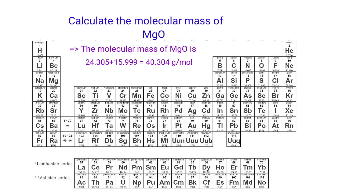So the molecular mass of MgO is 24.305 plus 15.999, which equals 40.304 grams per mole.